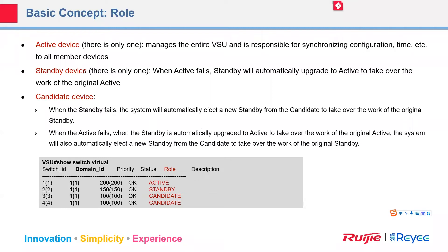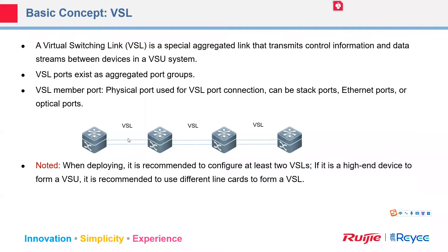About the role: we have three types — active, standby, and candidate. In one VSU there is only one active and only one standby, but we can have multiple candidates. If the active breaks down, the standby becomes the new active, and a candidate is selected as the new standby. Between different switches we use VSL — the Virtual Switching Link — to connect with each other. The suggestion is at least two links for the VSL for high availability.